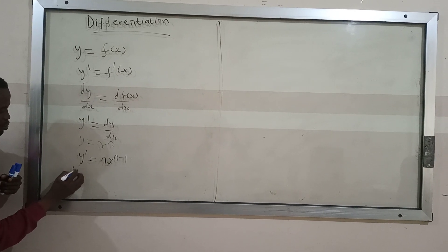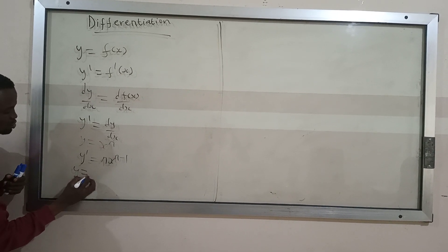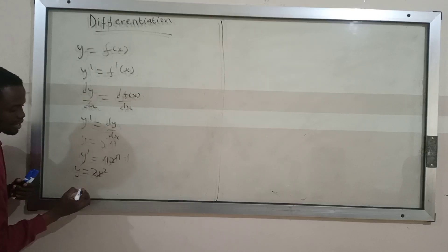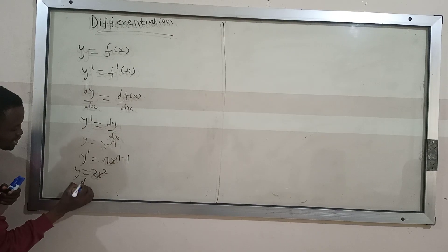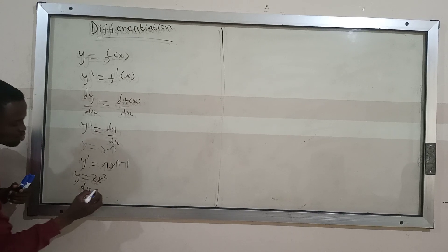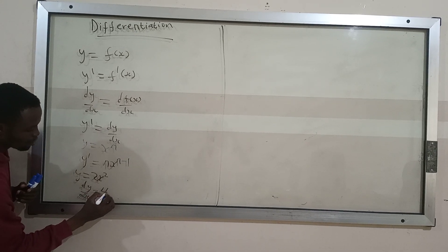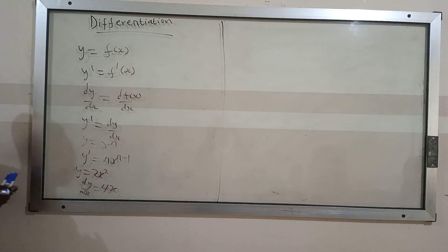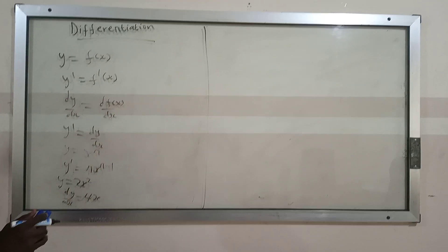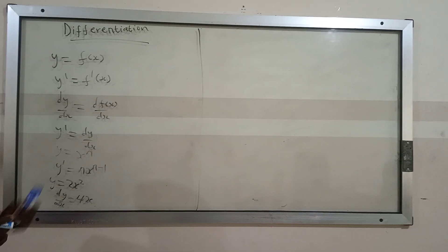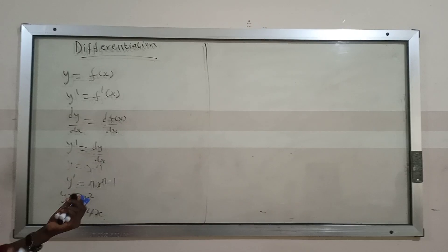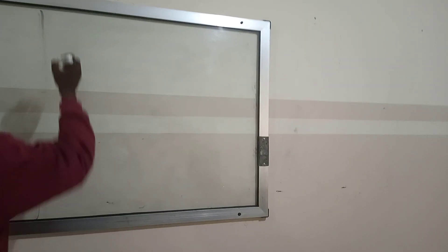For example, if you have y equal to 2x squared, and you want to differentiate this, you are going to get dy/dx which is equal to 4x. That's the answer. So now we are going to look at how to differentiate the log and the exponential function.